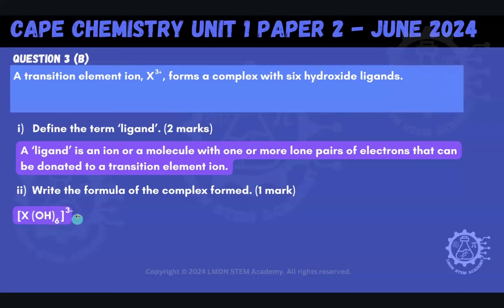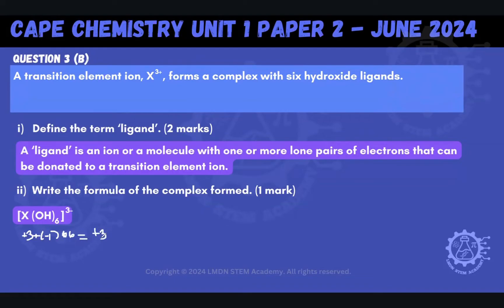We write that in square brackets. What I really want to point out is the charge on the outside, because that's something you have to be able to get to as well. The transition element ion itself had a charge of plus three, and the hydroxide ion has a charge of minus one. There are six of them, so we're adding plus three and minus six, which gives us minus three. That's how we know the charge on the complex ion — very important, don't overlook that.